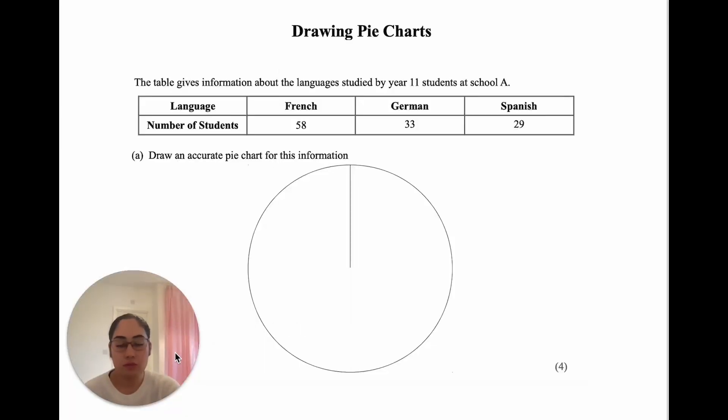Alright, let's look at how we would draw a pie chart. The table gives information about the languages studied by Year 11 students at School A. We have three languages: French, German, Spanish, and the number of students for each. Draw an accurate pie chart for this information. For this question, we're only going to look at part A, where we focus on how to draw a pie chart.